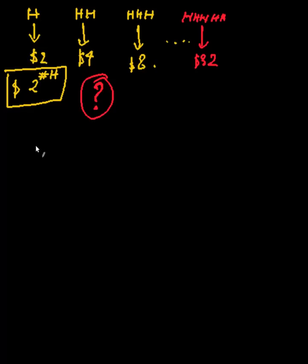So the probability of getting H equals X is going to be half to the power of X. So basically, the probability of getting two heads is going to be half to the power of two. The probability of getting three heads is going to be half to the power of three, and so on.